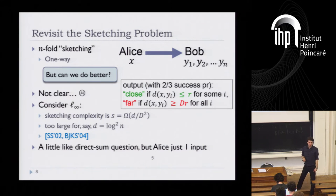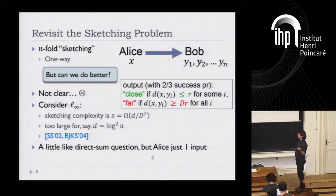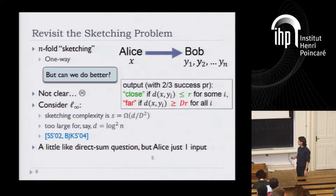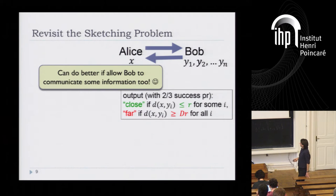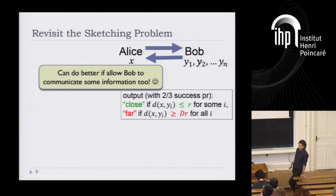This question looks a little like a direct sum question, except that Alice has just one input but Bob has many inputs. You have to apply this basic distance threshold problem for X and each of Y1 through Yn, applying an OR function at the end. It's not clear that we can do better. But it turns out that if you are a little bit adaptive — allowing Bob to communicate some information back in a two-way communication protocol — then you can suddenly do much better.